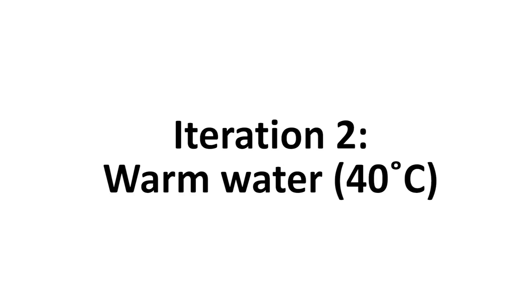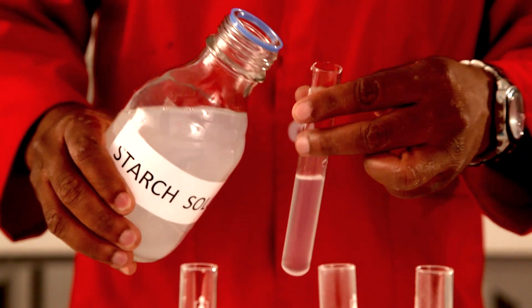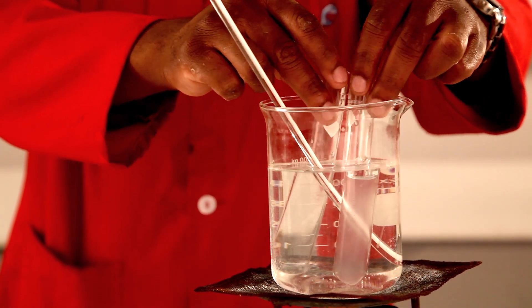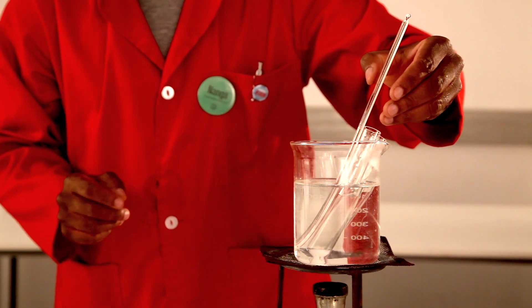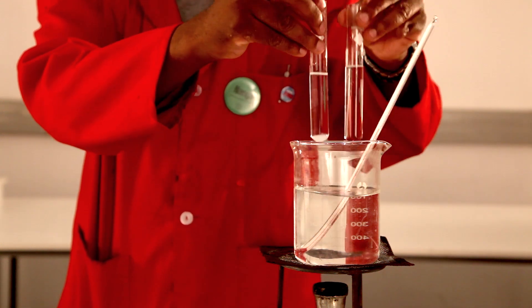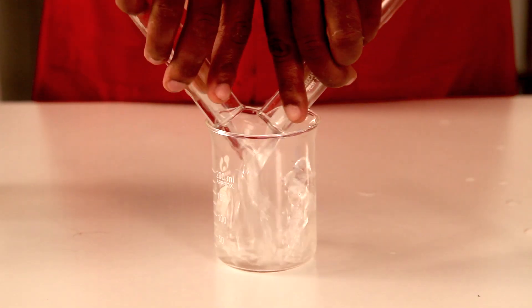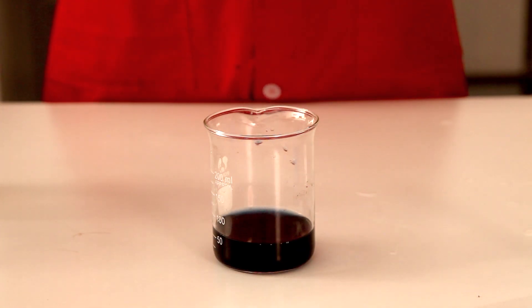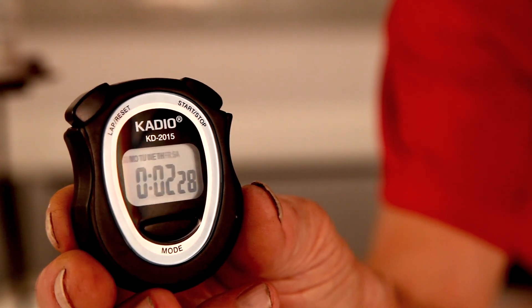Alteration 2: Warm water. Pour 10 cm³ of iodine and starch solution into separate test tubes and place them in a warm water bath at about 30 to 40 degrees Celsius. The temperature must not exceed 40 degrees Celsius. Leave the test tubes for about 5 minutes to acquire the temperature of the water. Then pour the contents of the test tubes into a 250 cm³ beaker. With a stopwatch, read the time elapsed from the moment the solution mixes until the mixture turns deep blue.